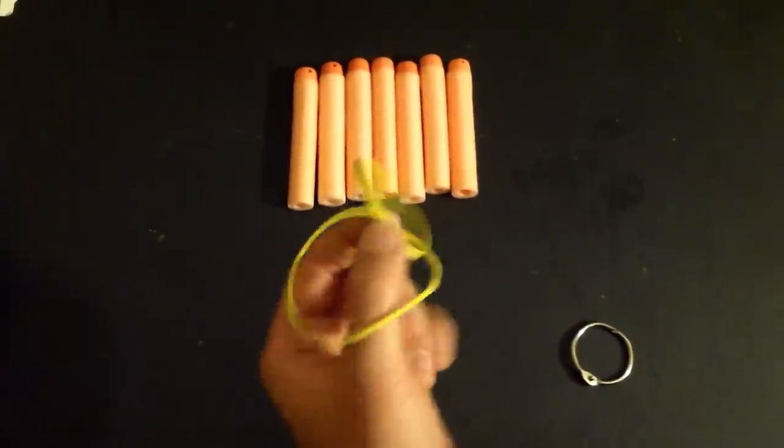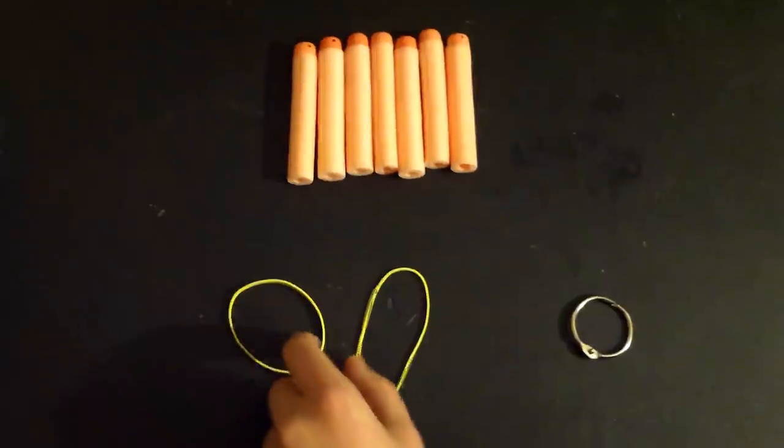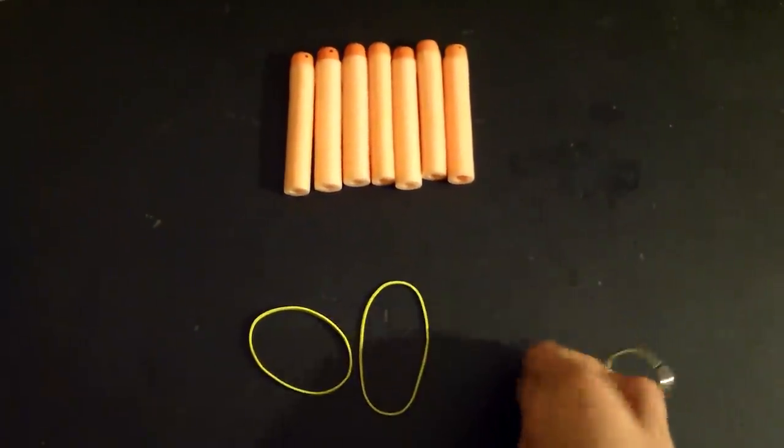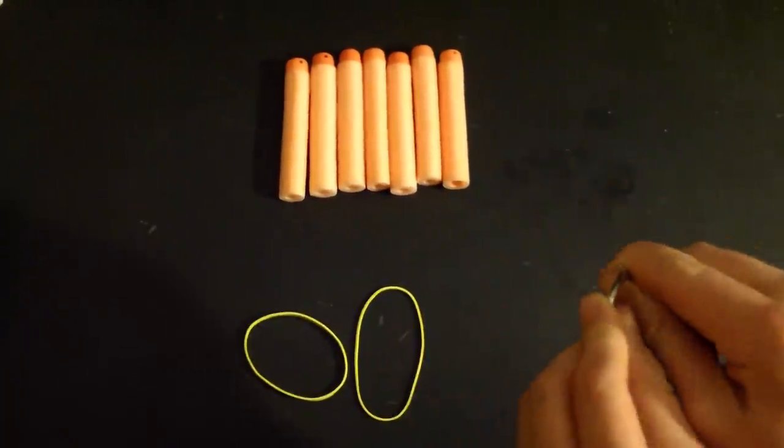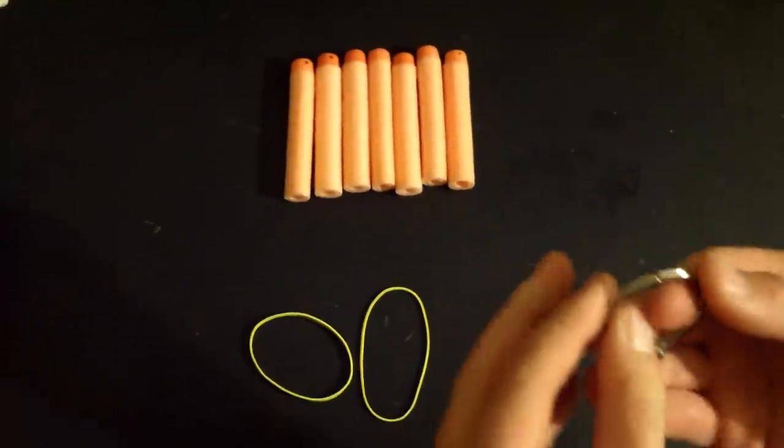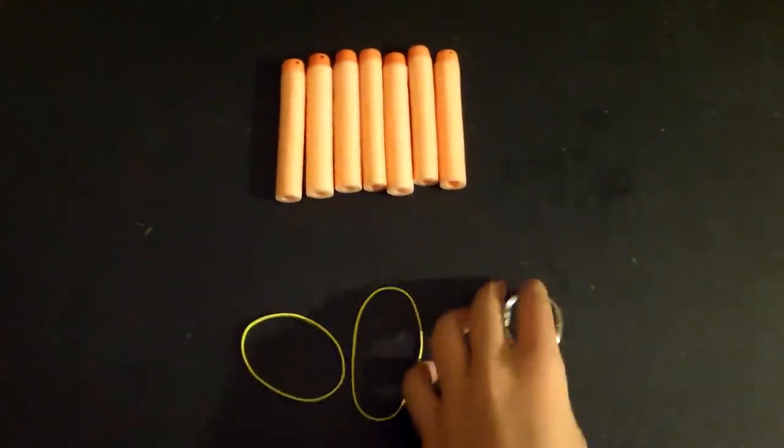Then you need 2 rubber bands. Any size really, but these are the general size you want. And then you need an open and closeable keychain clip.